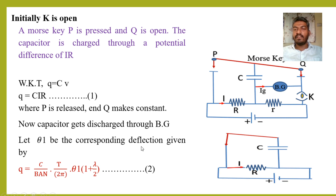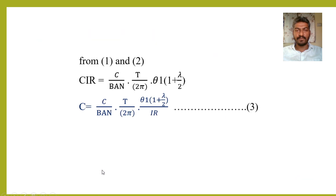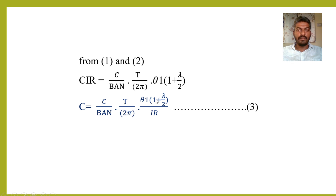From equations 1 and 2, the left-hand sides are equal, so we can equate the right-hand sides. By equating and simplifying, we get: C equals (C/BAN)·(T/2π)·theta₁·(1 + lambda/2) divided by I·R. Let us take this as equation 3.